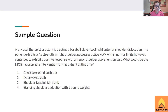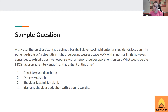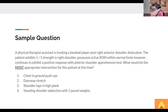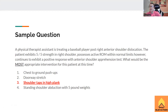Sample question: A physical therapist assistant is treating a baseball player with a right anterior shoulder dislocation. The patient exhibits five out of five strength in their right shoulder, possesses active range of motion within normal limits, however continues to exhibit a positive response with the anterior shoulder apprehension test. What would be the most appropriate intervention? One, chest-to-ground pushups. Two, doorway stretch. Three, shoulder taps in a high plank. Or four, standing shoulder abduction with five pound weights. The answer is shoulder taps in a high plank because this is a stability exercise.